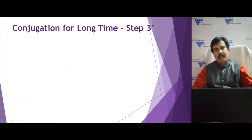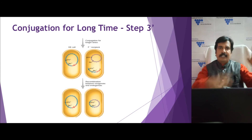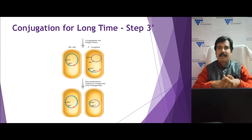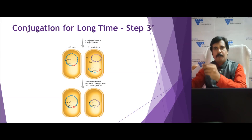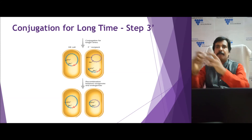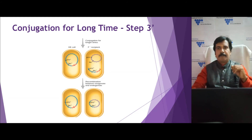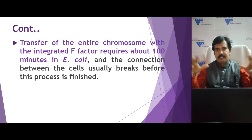If the contact is for a long duration (step 3 dash), the entire gene transfers into the F minus strain — both lac plus and pro plus. After that, the complementary strand is synthesized and recombines with the chromosomal DNA. The F minus cell then becomes both lac plus and pro plus. However, transfer is a time-dependent process.